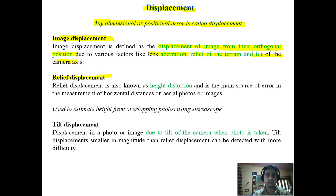Another type is relief displacement, also known as height distortion. This relief displacement is used to estimate height from overlapping photos using a stereoscope. Another type is tilt displacement — the displacement of a photo or image due to the tilt of the camera when the photo is taken. Tilt displacements are smaller in magnitude than relief displacements.